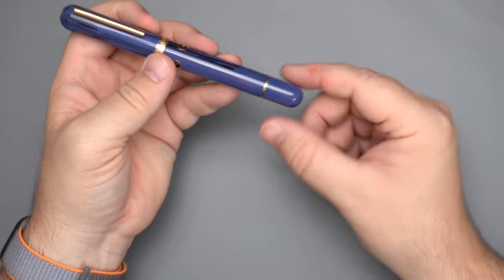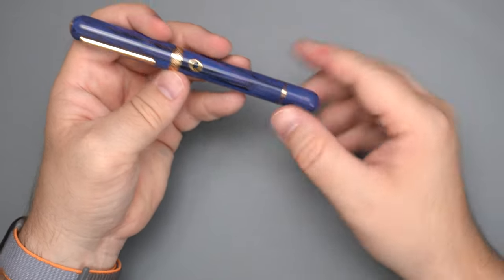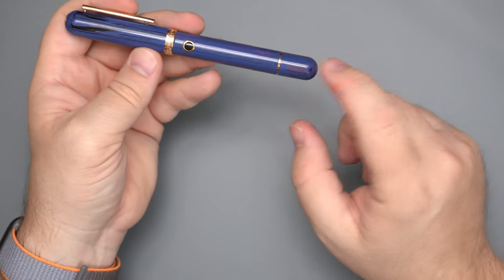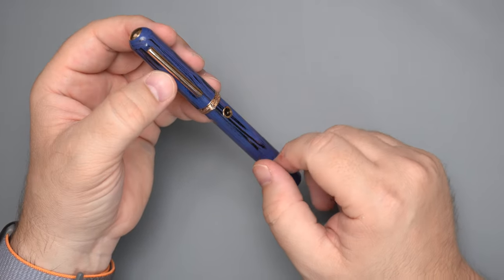You also have a ring down here. This is the blind cap to use the piston. This is a piston filler. You can't see the pistons and such in there because it's ebonite, obviously. But turning this will move the piston. You'll just have to trust me on that. It's full of ink. I'm not going to do it on camera.